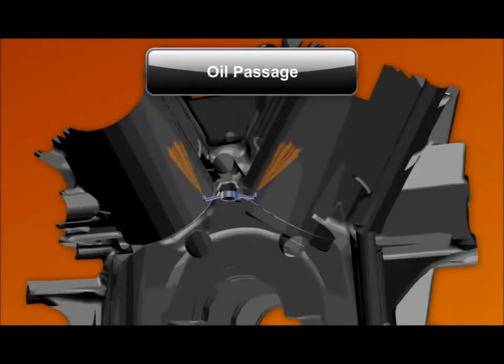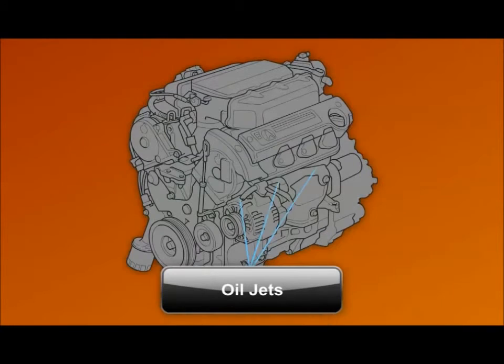A few oil passages end with oil jets, located on the block underneath the pistons. These oil jets spray oil into the cylinder to lubricate the cylinder walls and cool the piston bottom.